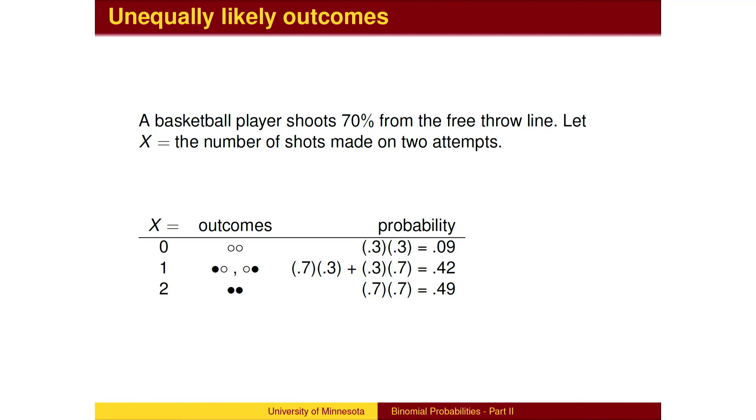Also notice that for each value of X, the probabilities of the separate strings are the same. For example, the probability of making the first and missing the second is the same as the probability of missing the first and making the second. They both multiply the numbers 0.3 and 0.7 in some order.